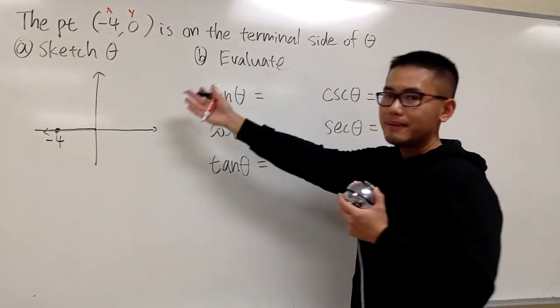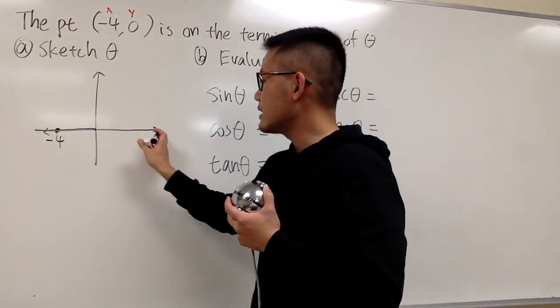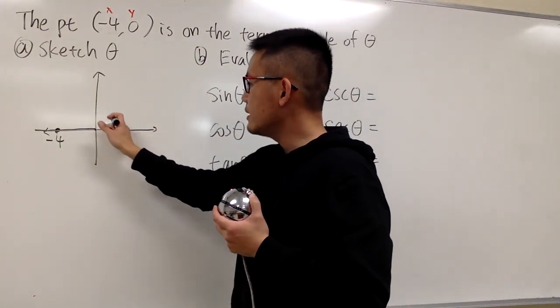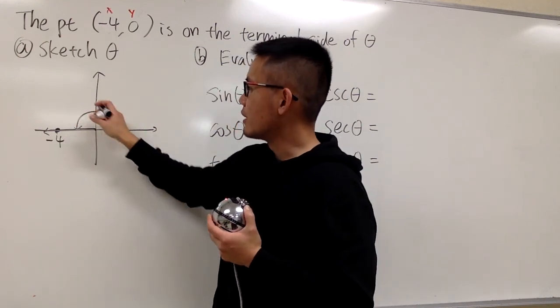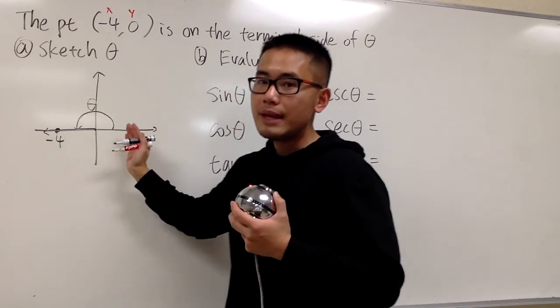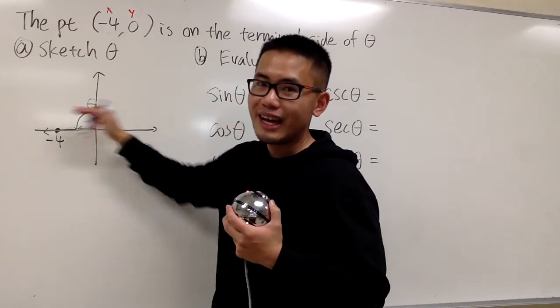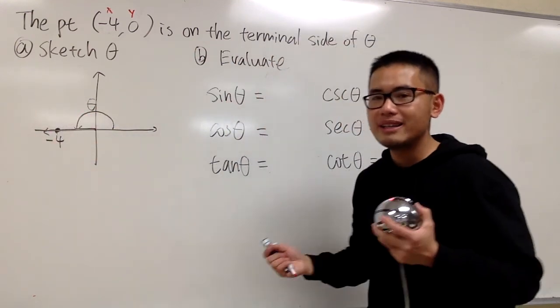And for the angle θ, well, you start with the positive x-axis, you rotate it until you hit the terminal side. So this right here is the angle θ, and you know this is just a straight line, so it is 180 degrees.